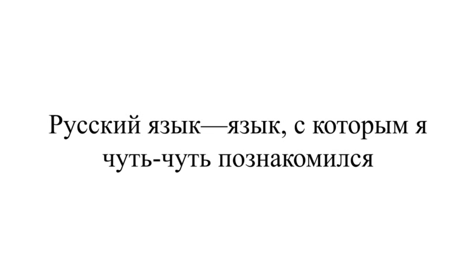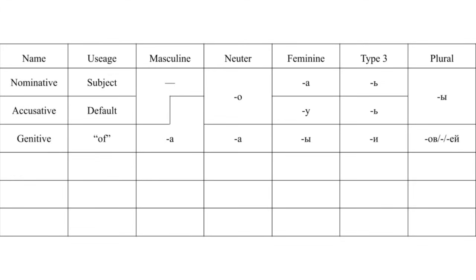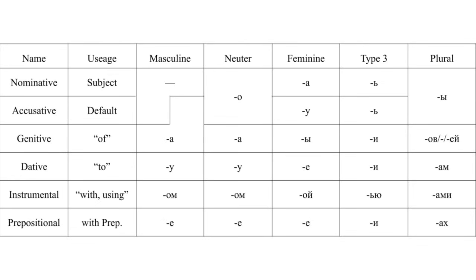Russian is an example language I'm relatively familiar with. Russian has six cases: the nominative for subjects, accusative for objects, genitive for 'of,' dative for 'to,' instrumental for 'with,' and prepositional for general locations.